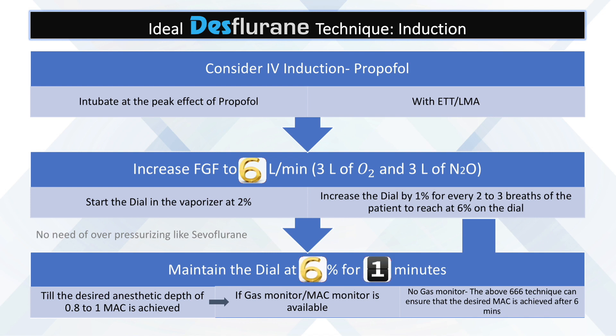Maintain the dial at 6% for six minutes — until the desired anesthetic depth of 0.8 to 1 MAC is achieved. If a gas monitor or MAC monitor is available, you can use that. Even without a gas monitor, the above triple-six technique can ensure that the desired MAC is achieved after six minutes.